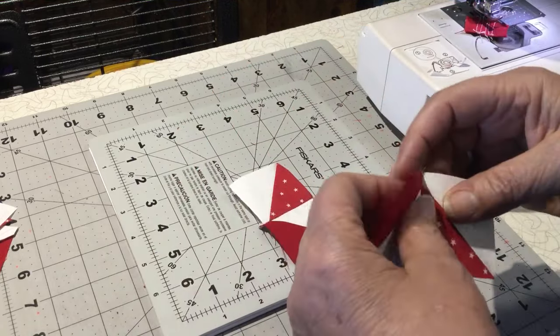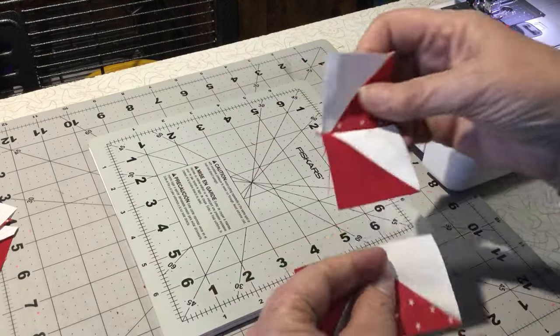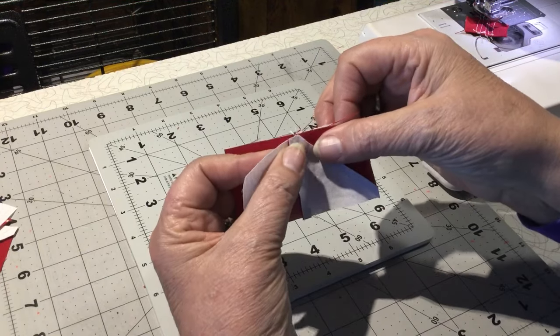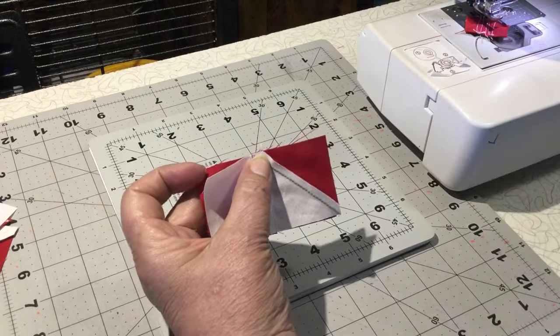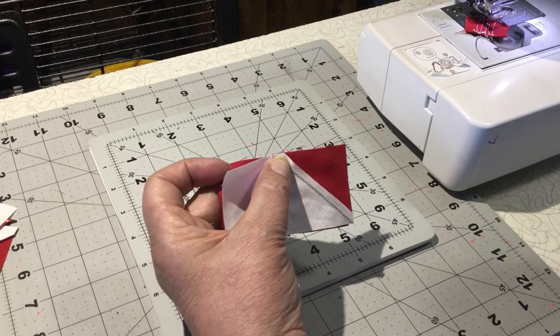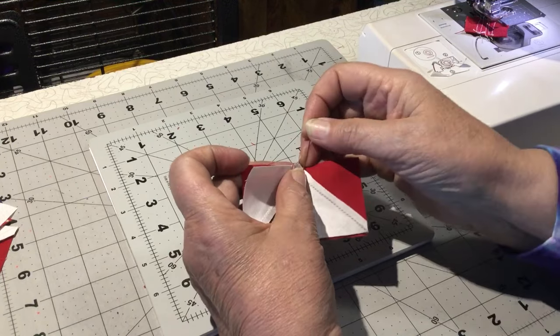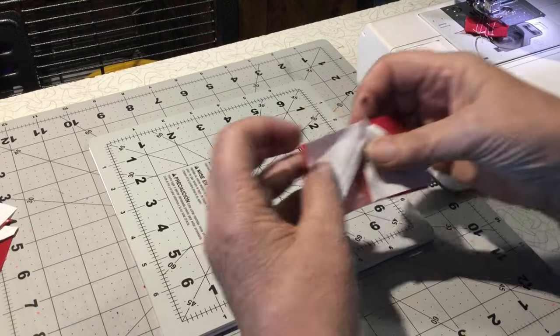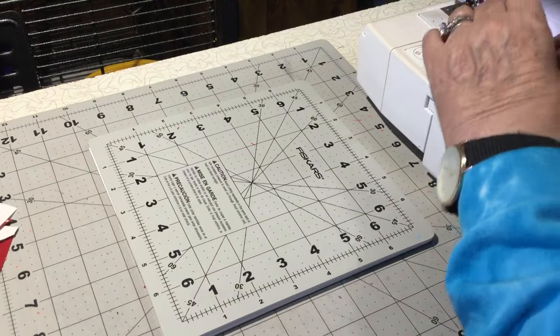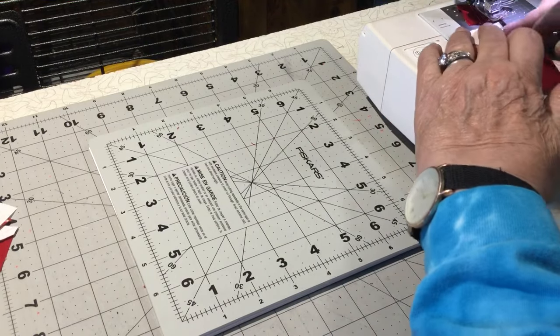So now, with that one flipped towards the dark, this is another nesting. And we pin the nesting. It just keeps it from moving. Line up this corner. Start sewing. The ender's in there.